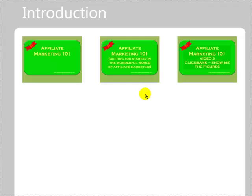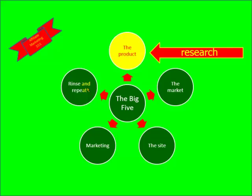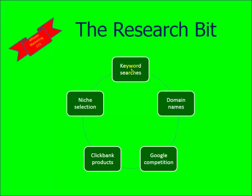Let's look at where we were previously. We discussed the five aspects involved in affiliate marketing: we've got the product, we've got the market, we've got the site, marketing, and then having done all this we simply rinse and repeat it. We're interested here in the product, and last time we were discussing how we can start doing our research in ClickBank. The research can be broken down to five components: keyword searches, domain names, Google competition, ClickBank products, and niche selection.